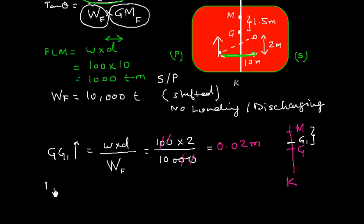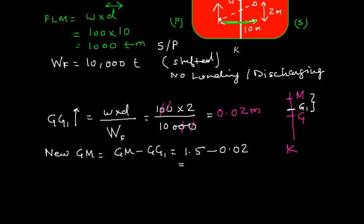New GM will be the old GM which is GM minus GG1. So, it is going to be 1.5 minus 0.02. This will have 1.5 minus 0.02 which is 1.48 meter.